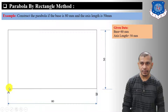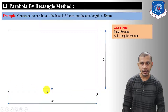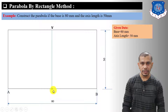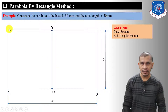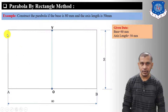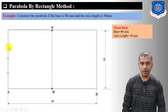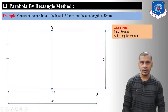To show the axis, find the midpoint of base AB, which is at a distance of 40 mm from point A and 40 mm from point B. From this midpoint, draw a line perpendicular to the base — this OV will be the axis of the parabola. Now divide this side of the rectangle into equal divisions, let's say four equal divisions. You can use a scale or the inclined line method to divide the line.